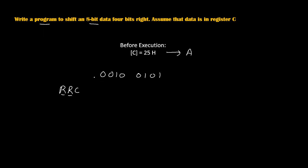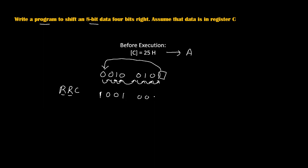Using RRC, we rotate each and every bit towards the right without carry. After the first rotation, every bit gets shifted right, and the LSB 1 gets shifted to the MSB position. So after the first rotation our number becomes: 1, 0, 0, 1, 0, 0, 1, 0 — that is 92H.